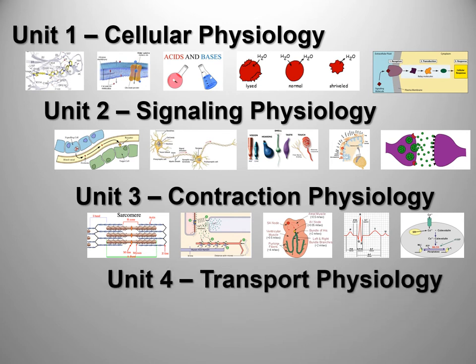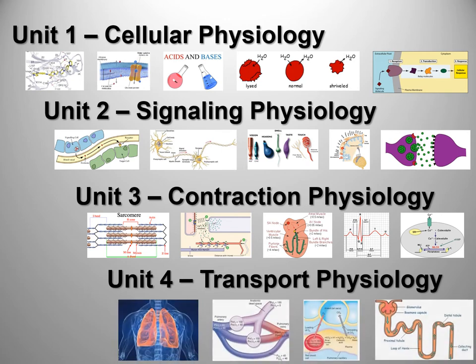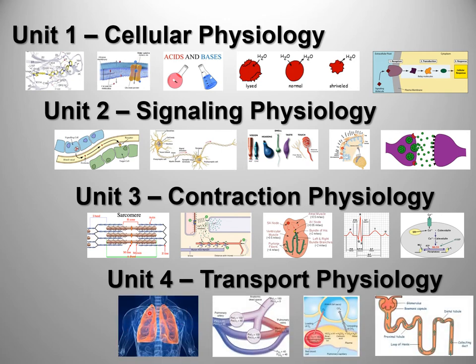Finally, we get into transport physiology, which in some cases involves muscles. We're going to talk about respiration and the vascular system, gas exchange and transport in the blood vessels, tissues, and lungs, and then the urinary and renal system. Those are our four units for this semester, and we're going to have exams at the ends of each of these units.